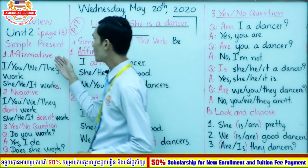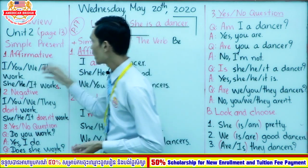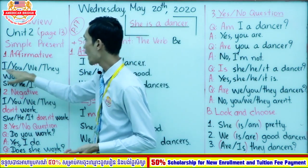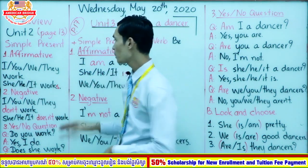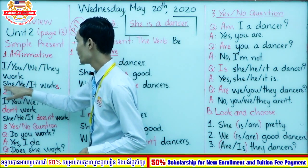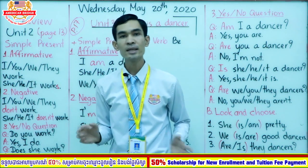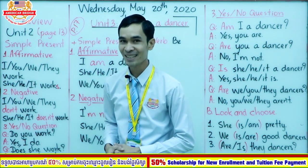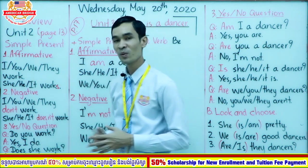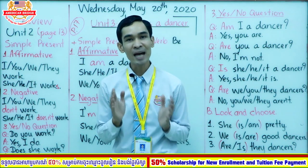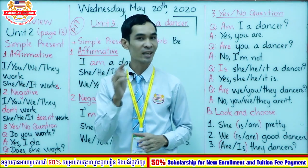For affirmative, we have two different subject forms. If the verb is used with I, you, we, they — we don't add 's'. But if the verb is used with she, he, it — you need to add 's', 'es', or 'ies'. Did you remember that? Make sure you can use this well. We add 's', 'es', or 'ies' only in affirmative form.